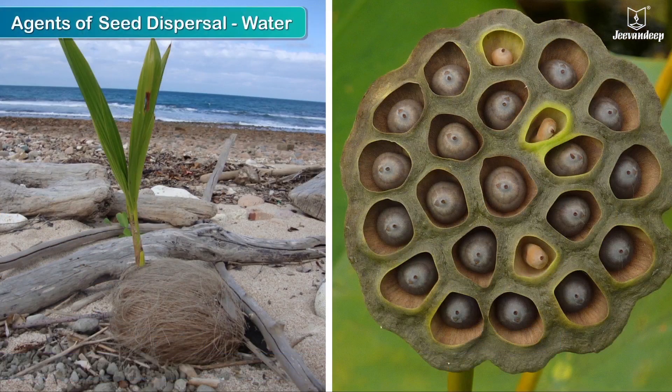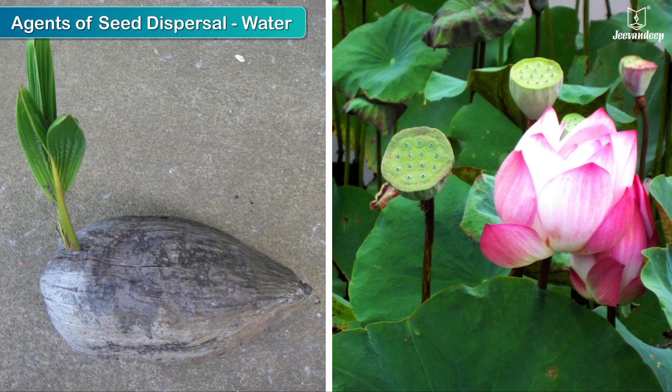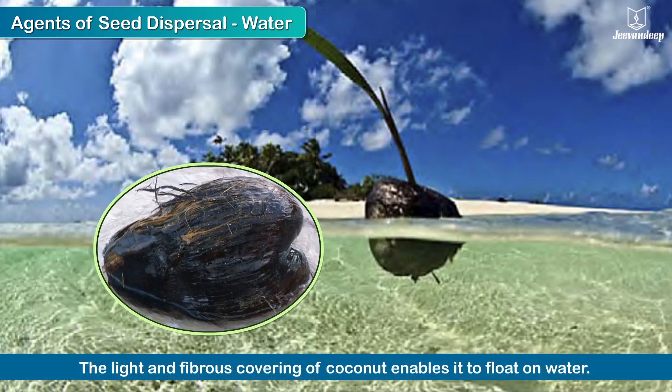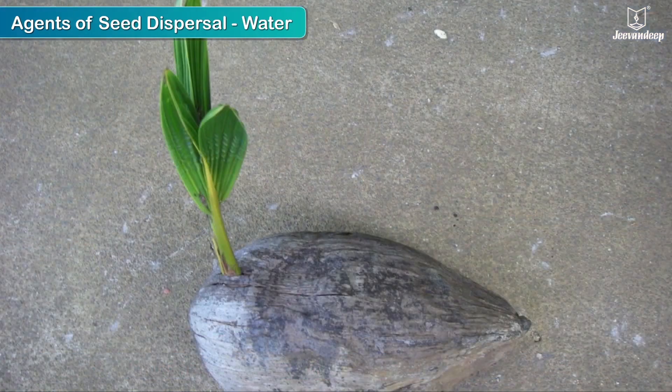Seed dispersal by water. Plants that grow near or in water bodies disperse their seeds through water. The seeds float on streams, rivers and ponds and are carried to distant places. Coconuts have a light and fibrous covering because of which they float on water and are carried to far-off lands.